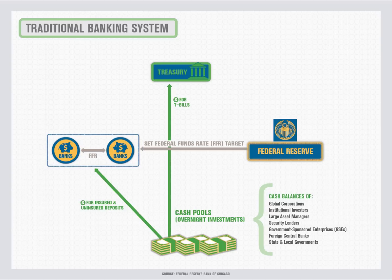The Federal Reserve, hereafter the Fed, interacts with the traditional banking sector by setting a target for the federal funds rate. For decades prior to the 2008 crisis, the target was achieved through temporary or permanent purchases or sales of government-guaranteed securities from and to banks. These transactions, known as open market operations, aim to adjust the supply of reserve balances in the banking system to create conditions that encourage the federal funds rate to trade at the target level.